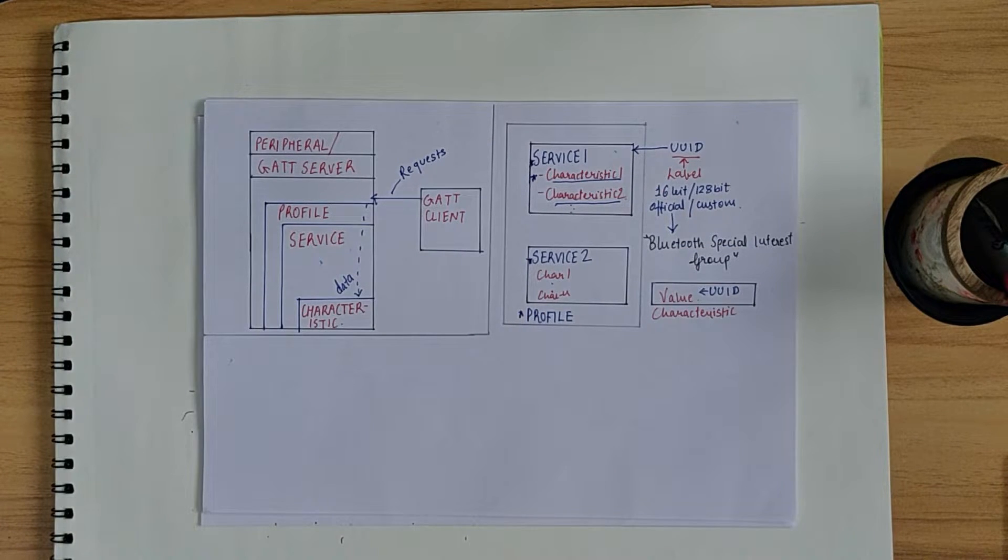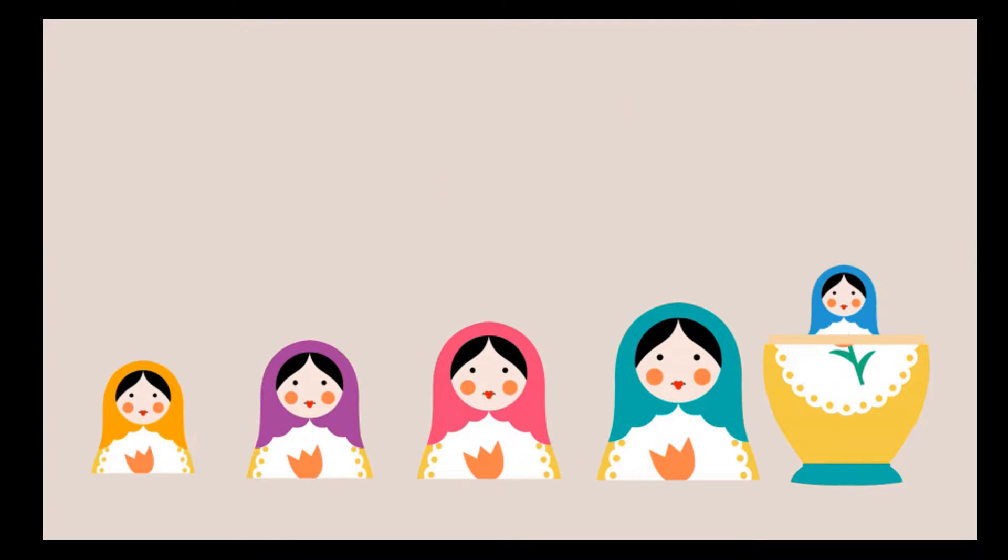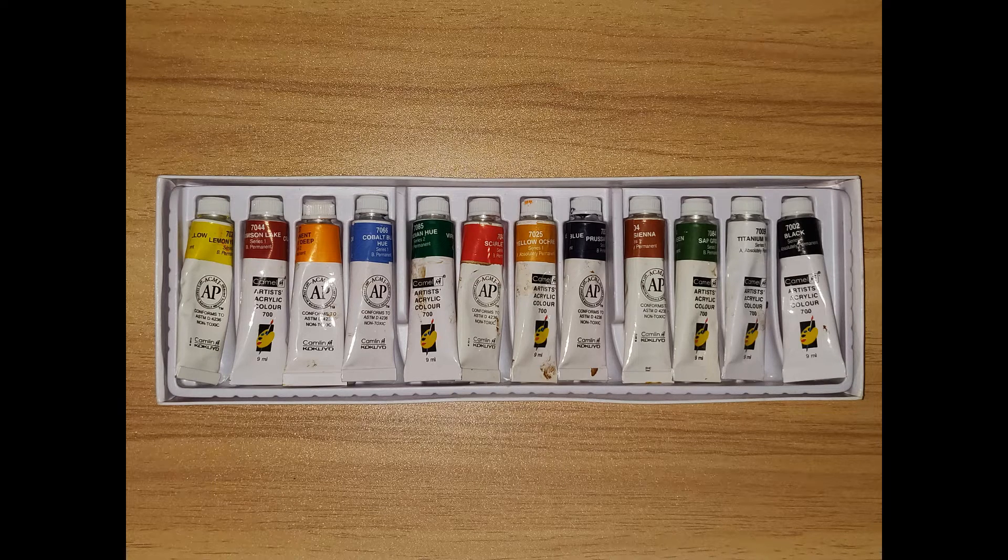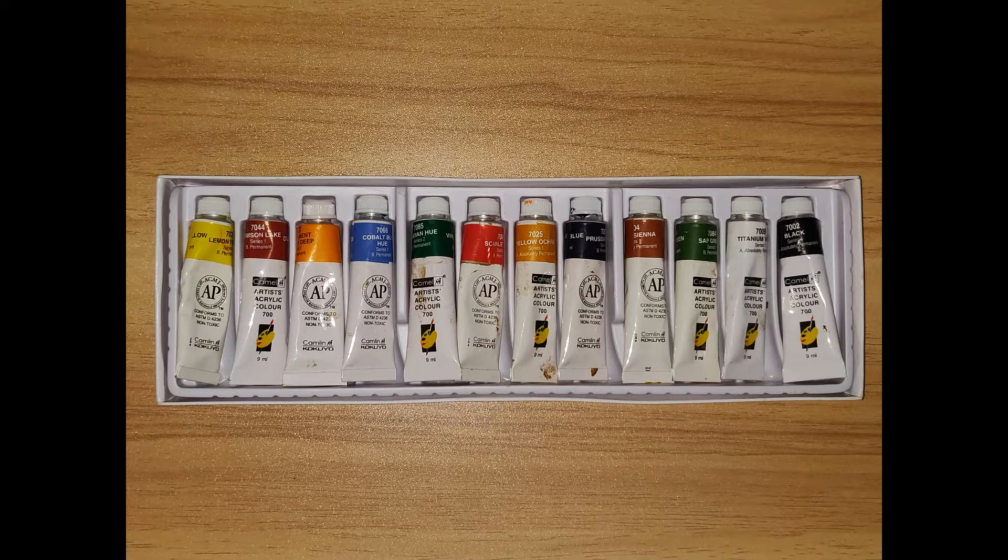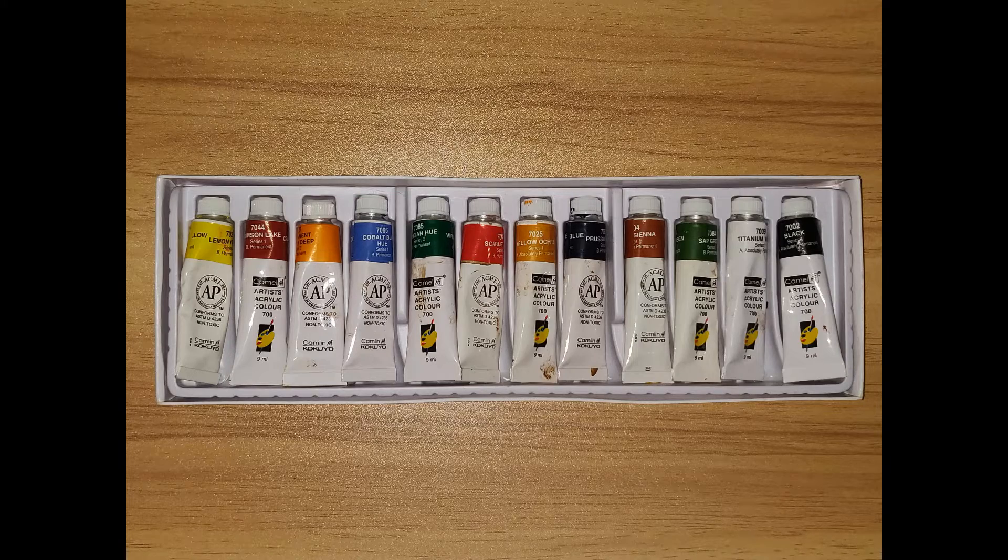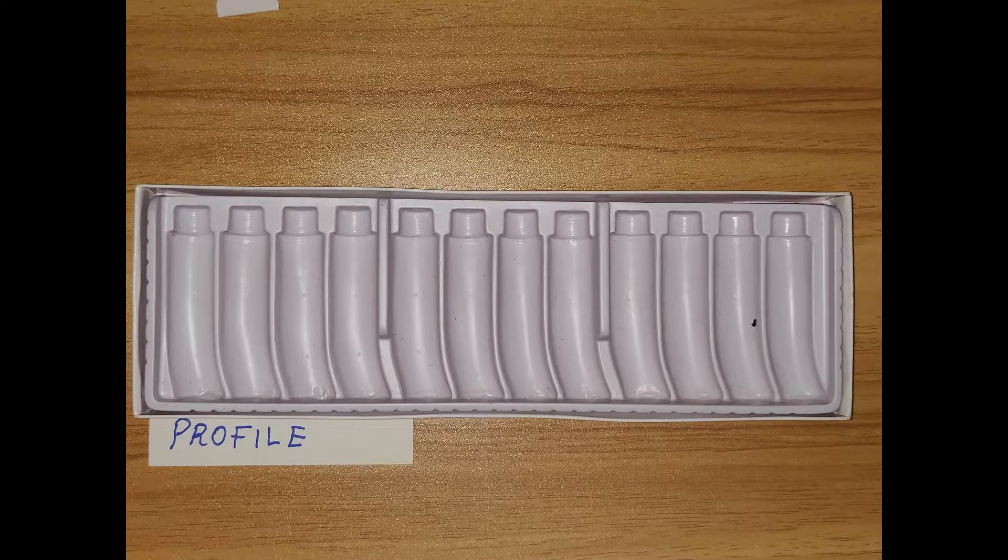Now, one may wonder why is there a need for this sort of hierarchical structure? That is, profile containing services, services containing characteristics. Why do we need that? So, for that, let's have a look at an analogy. By the way, those are Russian dolls, like a doll within a doll within a doll. So, let's consider a better example than this. Now, as I'm a part-time artist, let's consider an art example.